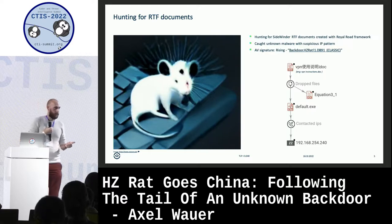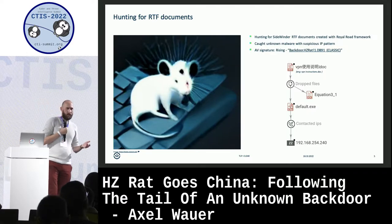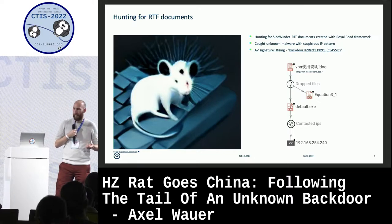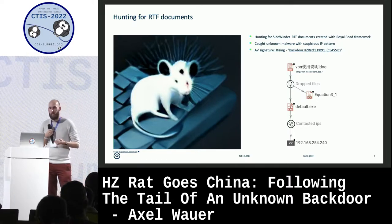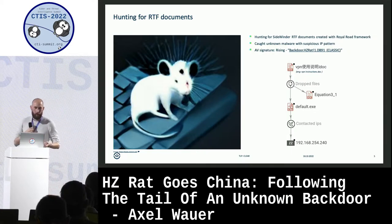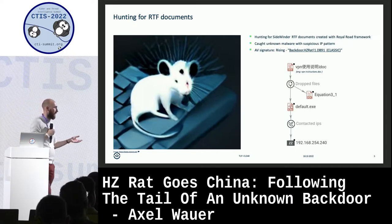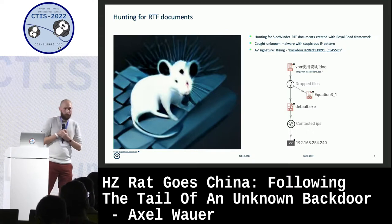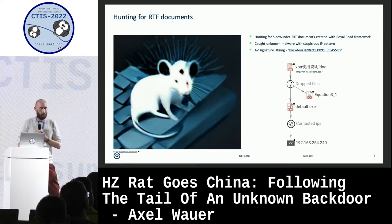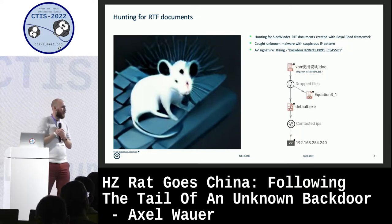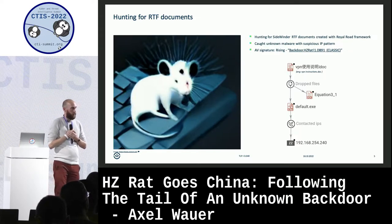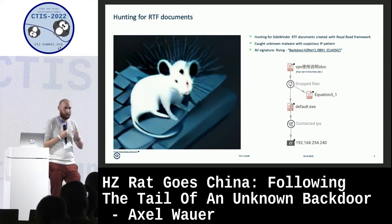No one had analyzed this before. All AV signatures we found were generic or heuristic, so nothing that could really help us. The only AV signature which helped was one from Rising called Backdoor HardZ-RED, which gives the malware its name. It's now called HardZ-RED, but there was still no public knowledge available, which is why we decided to write a blog article about it and maybe do a talk. So I'm here now.